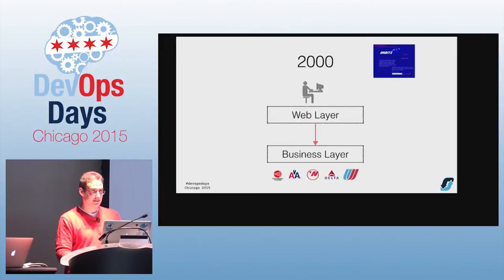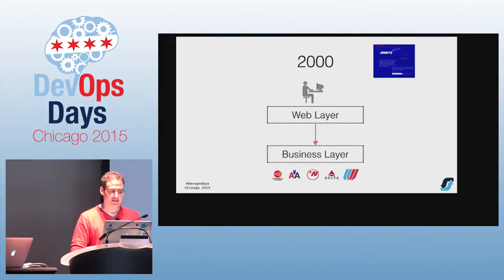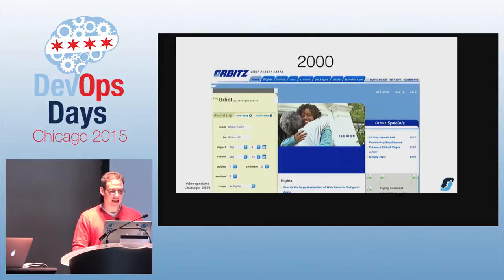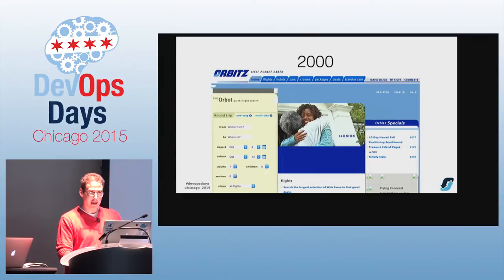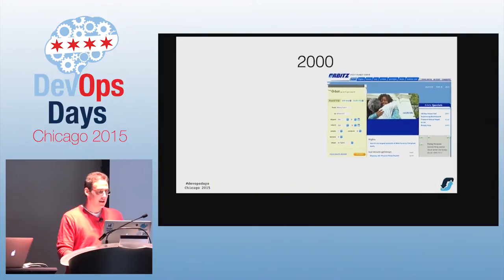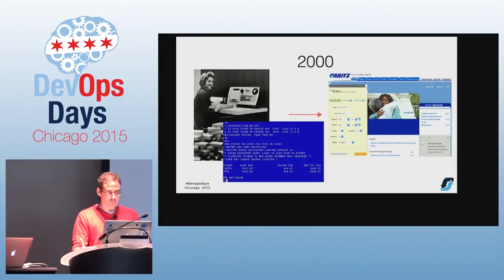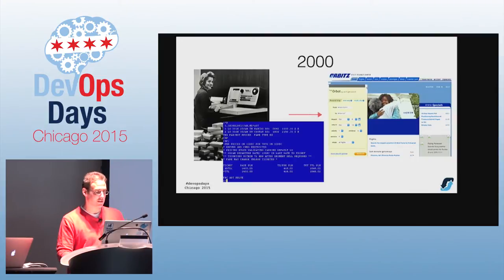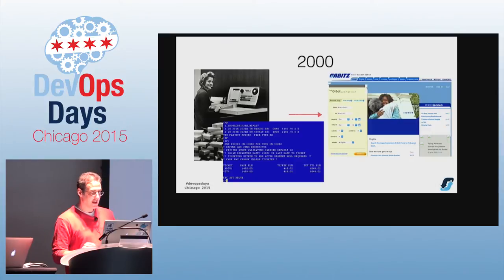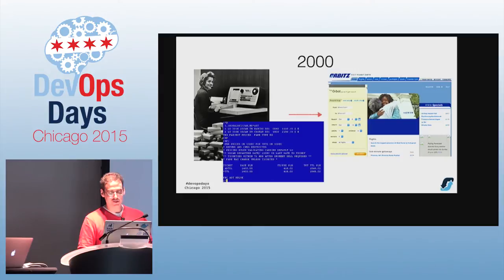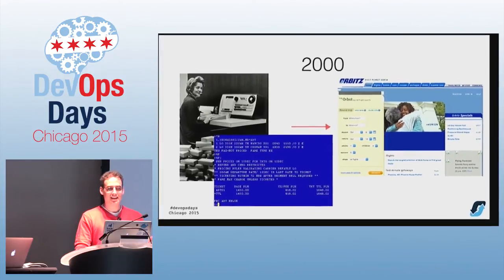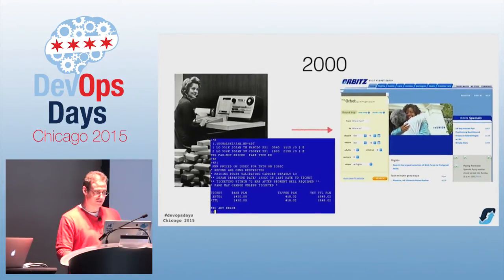The architecture looks something like this — standard 2000 architecture. You had your web layer, you talked to your business layer, which talked to the airlines. The website was launched in 2000 with what we still call the Orbot. We had one application and did releases as needed. Alongside Expedia and Travelocity, we basically brought travel to the customer. It became self-service — you didn't have to call someone on the phone and have her type cryptic commands into systems invented before most of us were born.